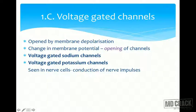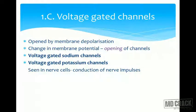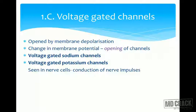For voltage-gated channels, most are opened by depolarization of the membrane — a change in membrane potential opens the channels. Good examples are the voltage-gated sodium channels and voltage-gated potassium channels, mainly seen in nerve cells and important for the conduction of nerve impulses.